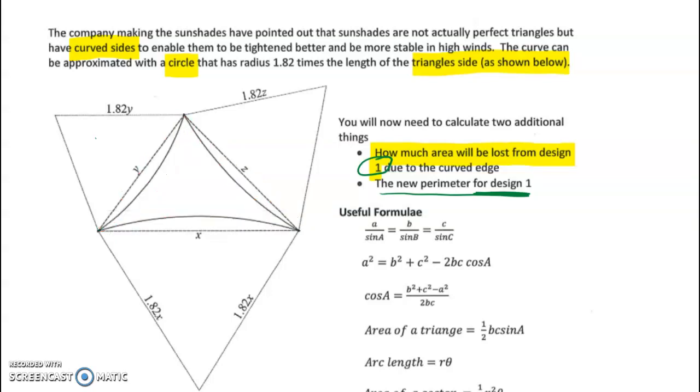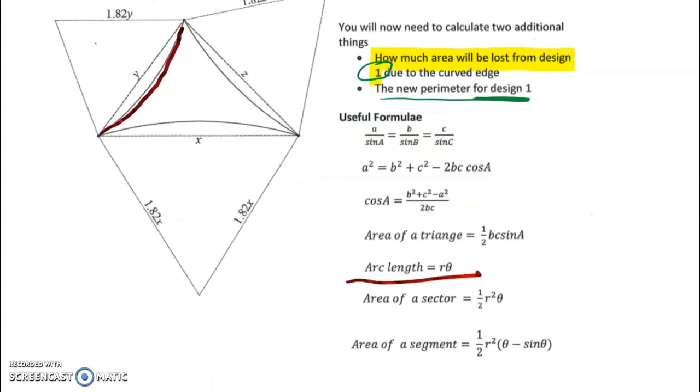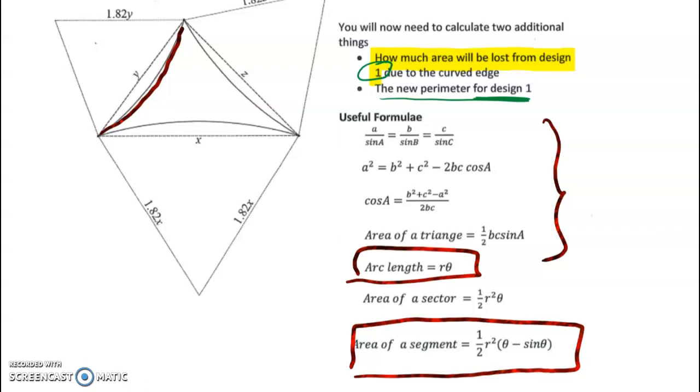That's what we're going to need to do for the first bullet point. For the new perimeter for design one, instead of having the straight edges of the triangle, it's got three curves and these are arc lengths. If you look at the formula that we're given, we'll be using the arc length one, and we'll be using the formula for the area of a segment, which is simply the area of a sector minus the area of a triangle.